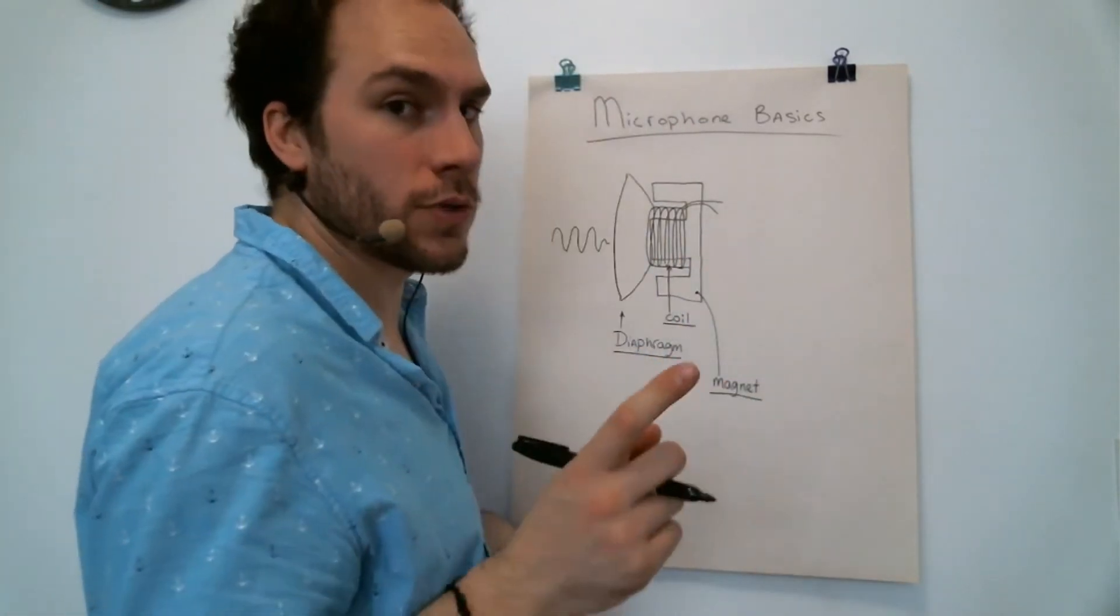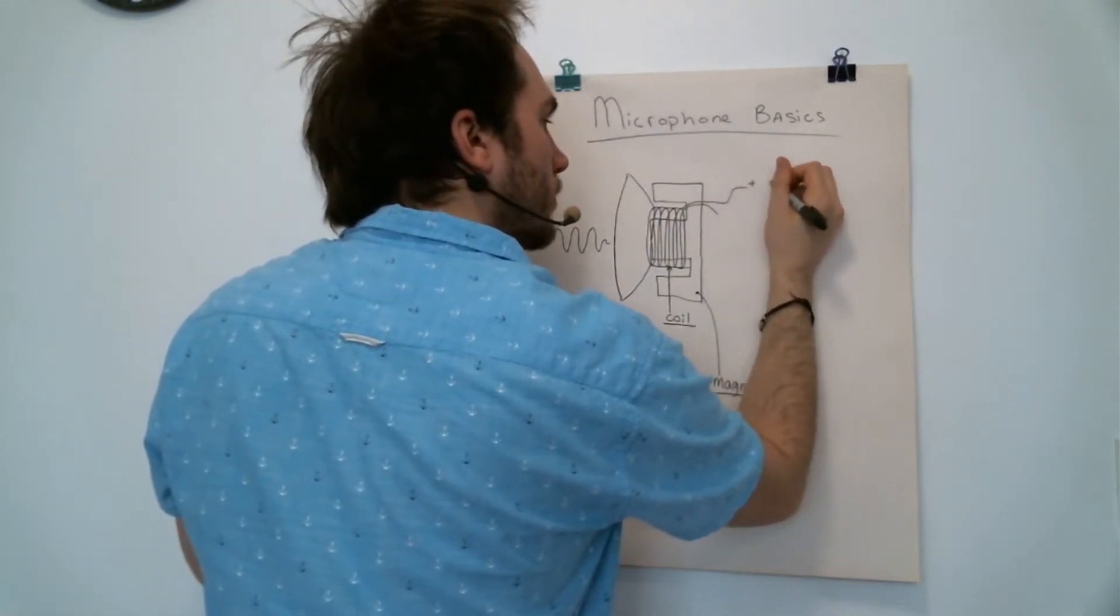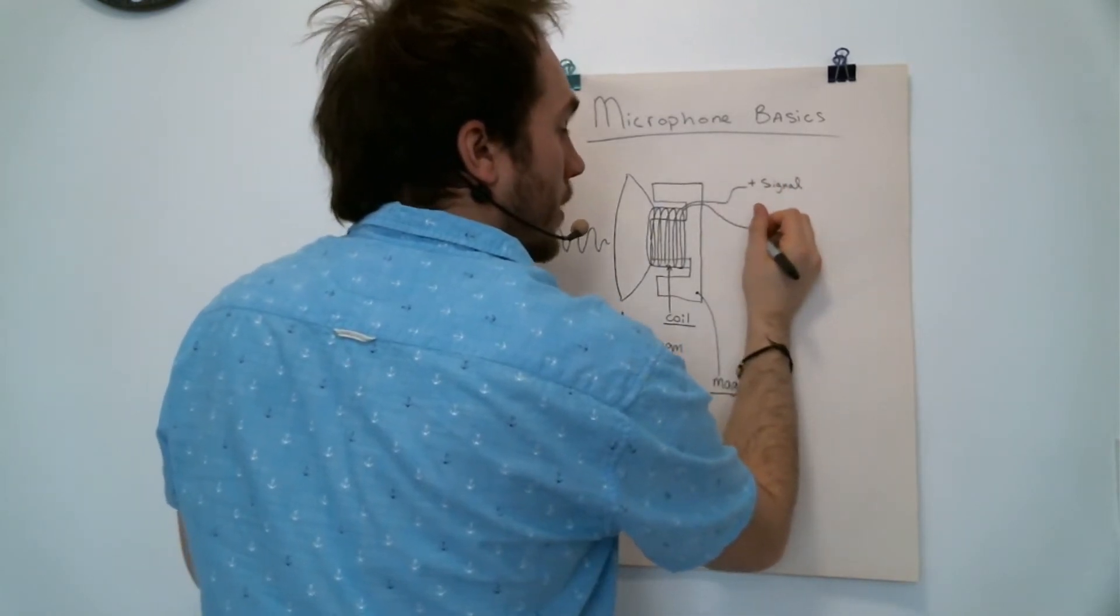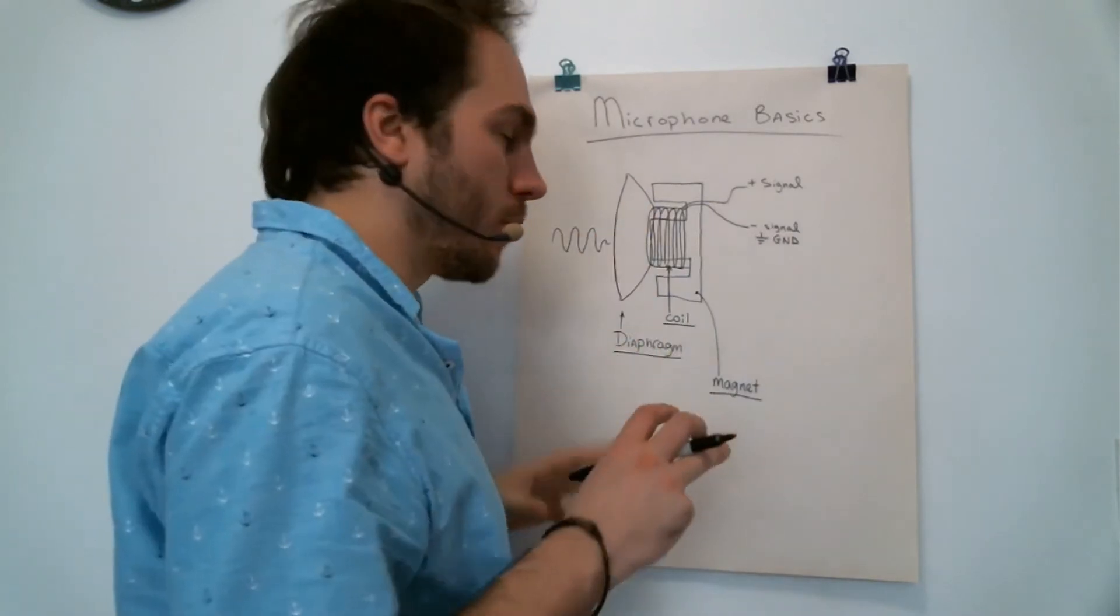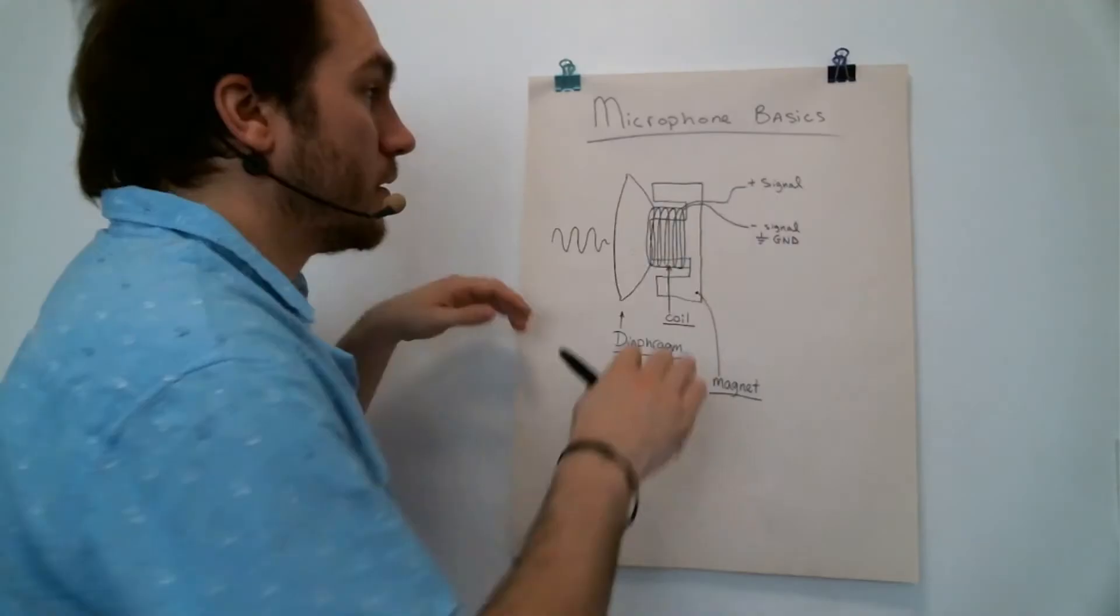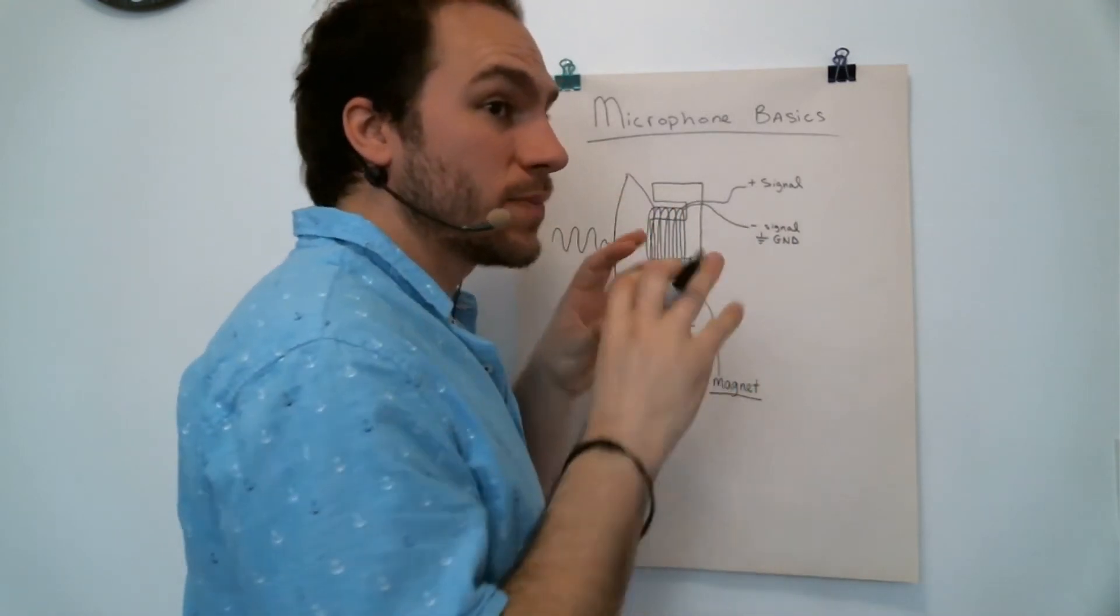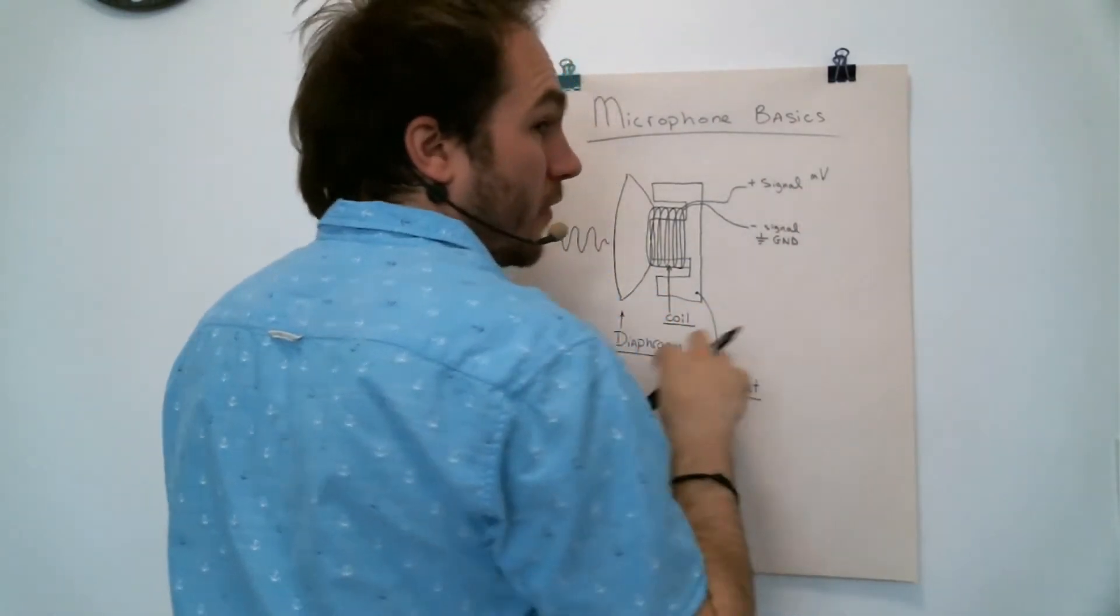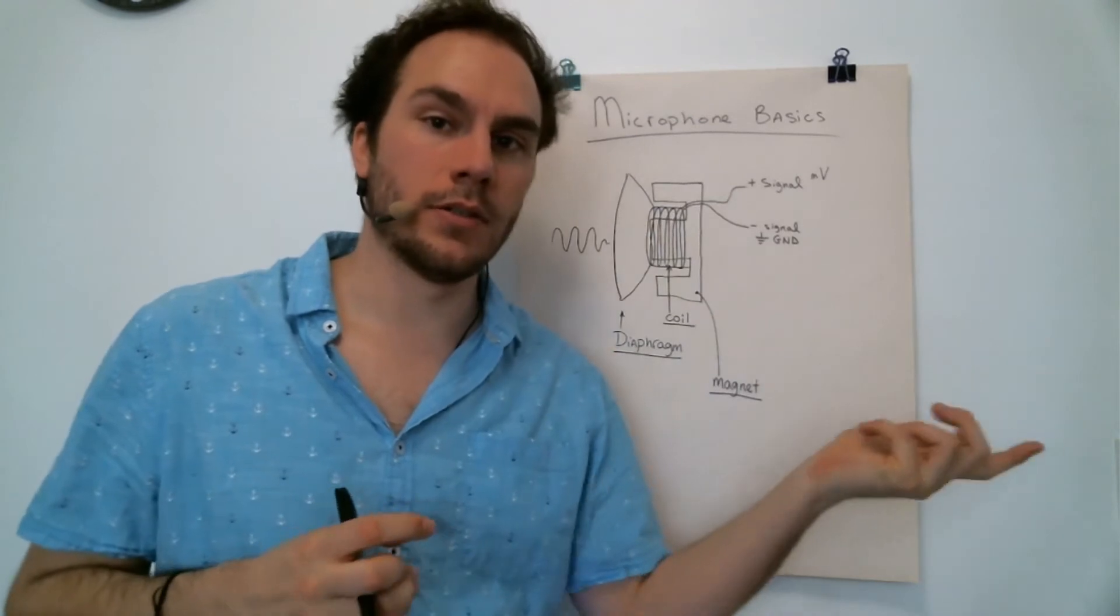The coil usually has two ends: the positive signal and the negative signal. Some microphones are by far more complicated than this one, but we will stick with this design for now. The audio signal at the output of the coil may be a really small signal, around millivolts. That's why the signal will then be fed into a pre-amplifier circuit to then be output into a mixer, your amplifier, or your computer.